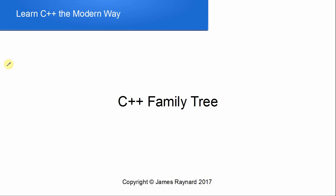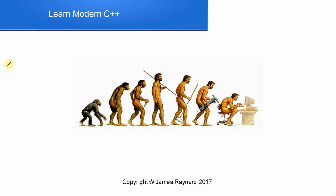Hello, and in this video we're going to look at the C++ family tree. Computer programming languages have been around since the 1950s. They've undergone a very long process of evolution, and we're going to look at how we arrived at C++. This may sound like a bit of a pointless history lesson, but it's very relevant to understanding why C++ is the way it is today.